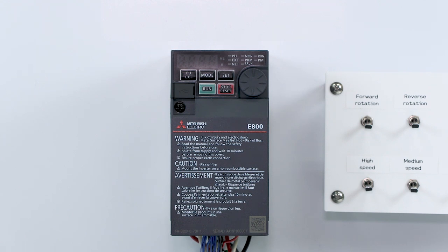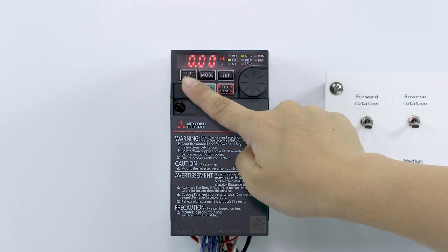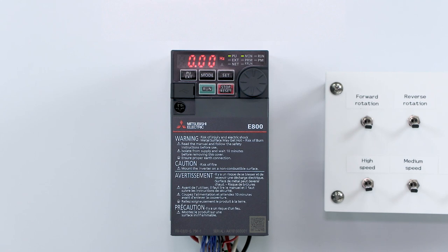The LED display illuminates when the inverter is turned on. First, set the operation mode. Press the PU EXT key to select the PU operation mode.